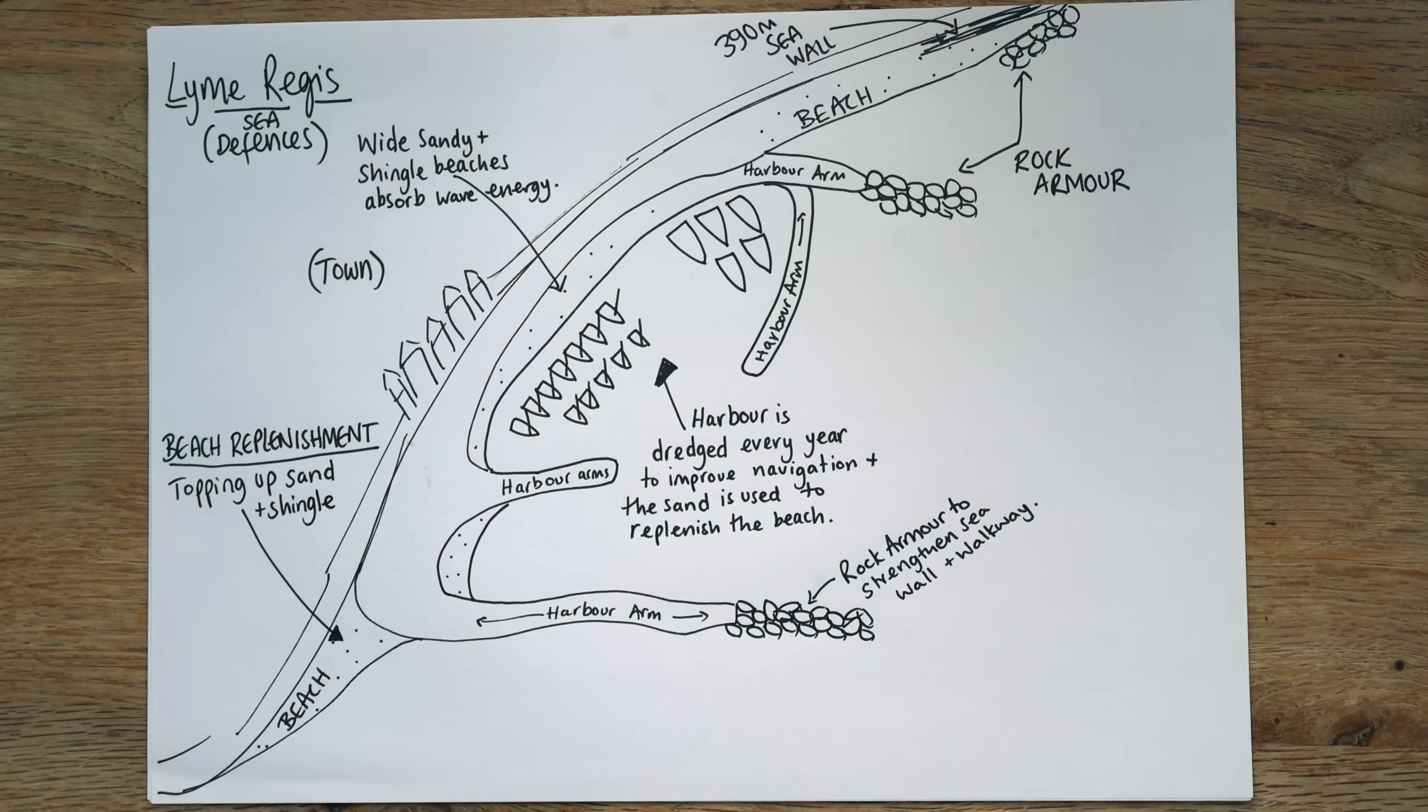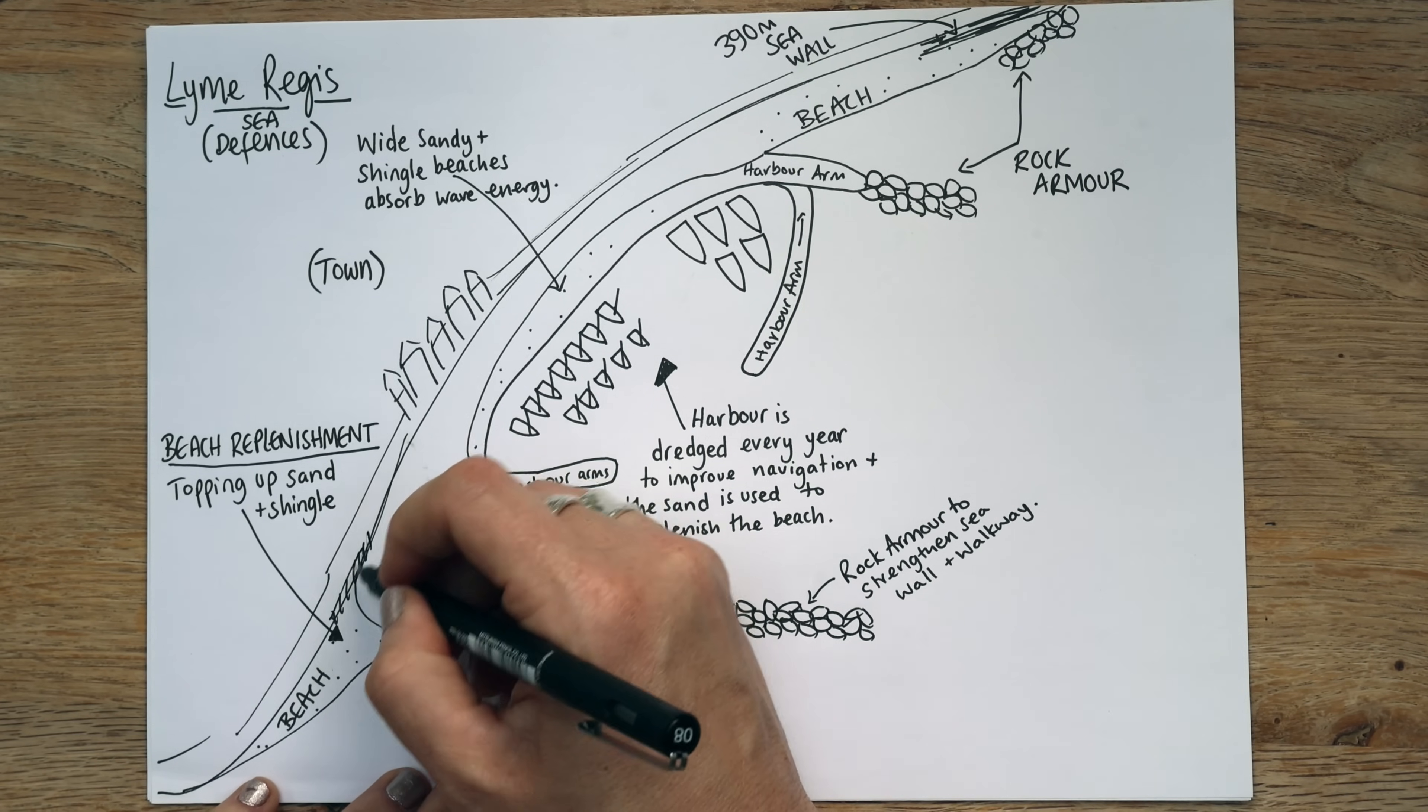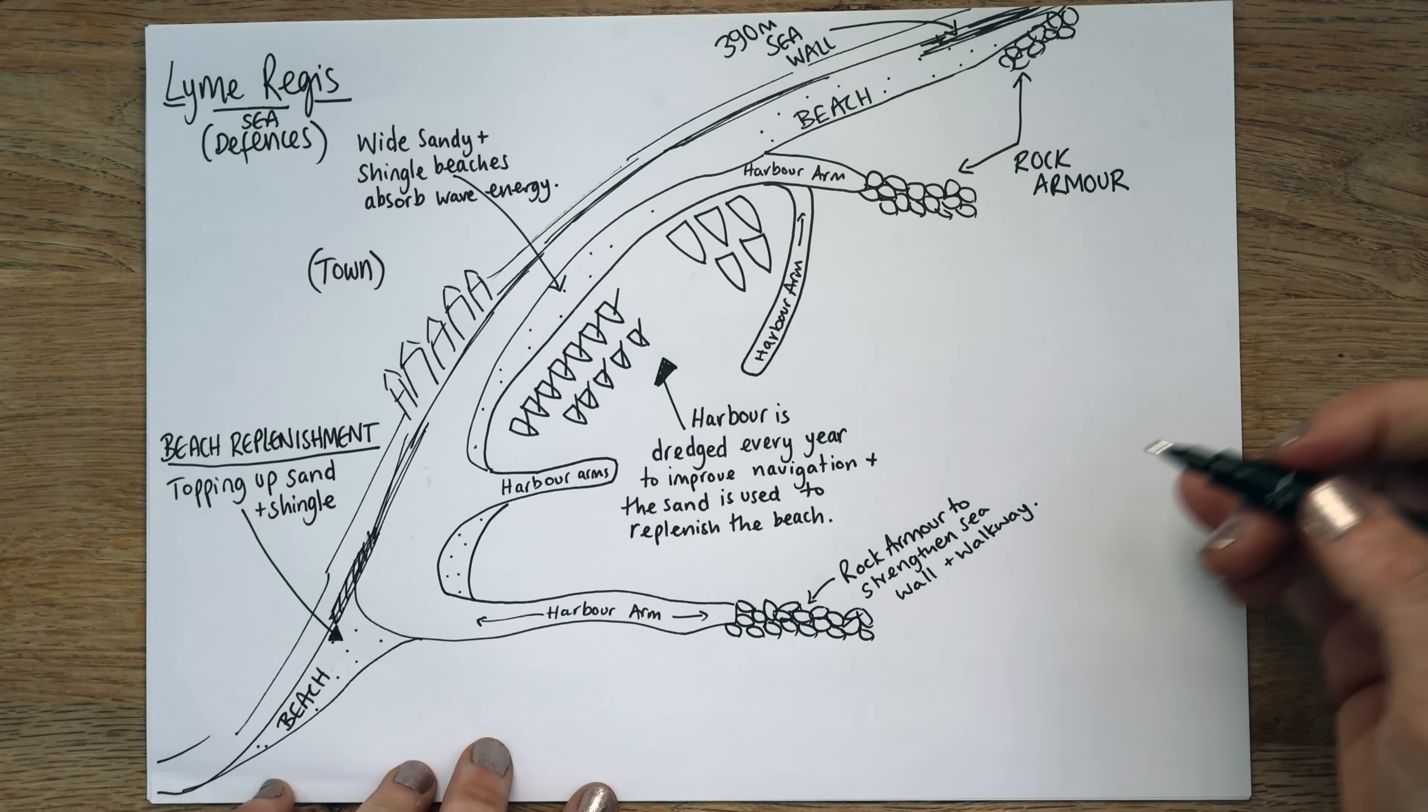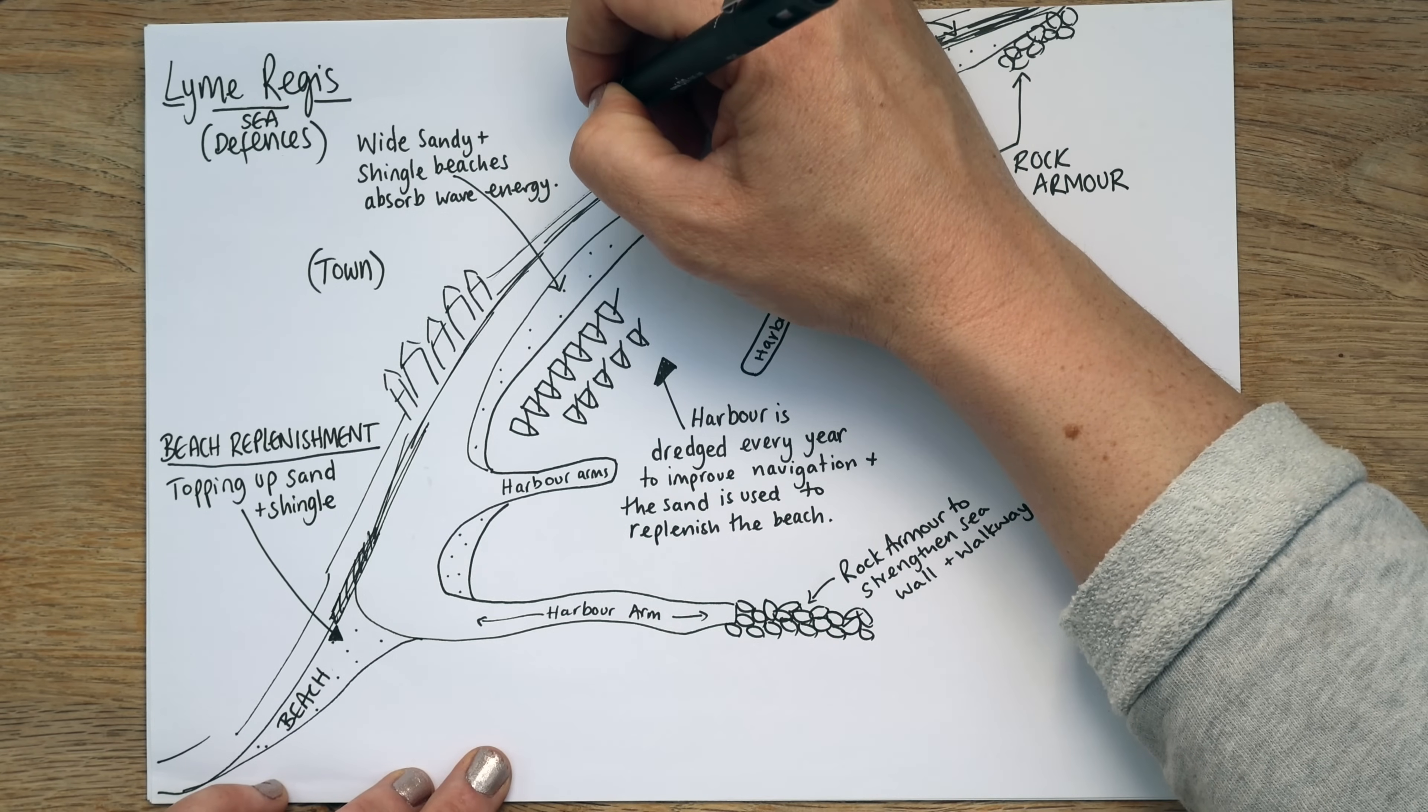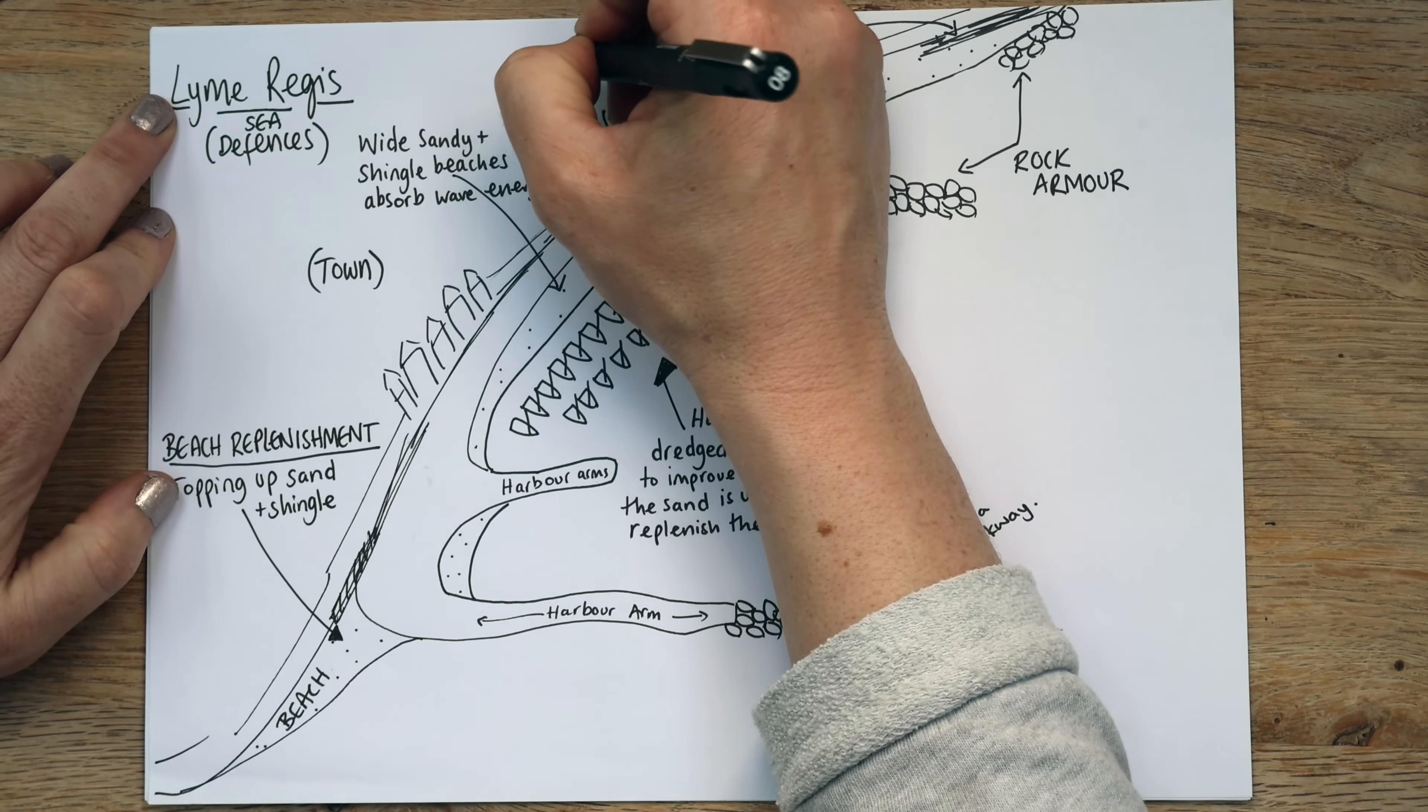So we've talked about rock armour. We've talked about beach replenishment. We've talked about the effectiveness of beaches. Now, quite a lot of Lyme Regis, I'll just do it as almost this kind of darker sections, it has quite a lot of sea wall. Now, some of this is old, it was put in place in the 1970s. Some of it's new, like this 390 metres of sea wall over on the north-west side. But most of it is being managed and looked after and maintained.